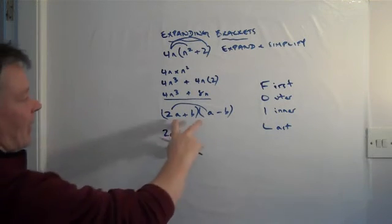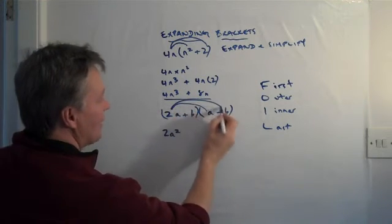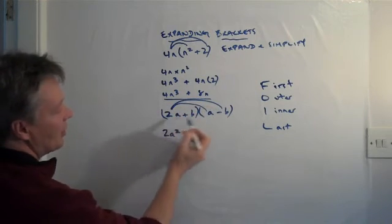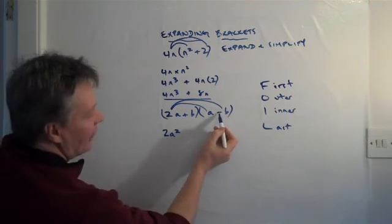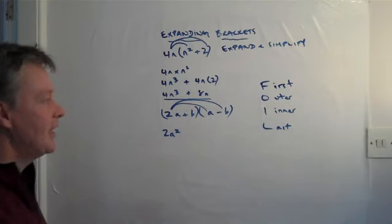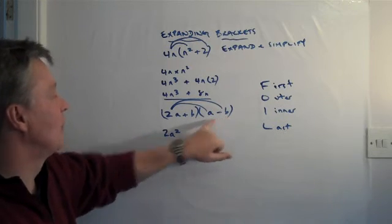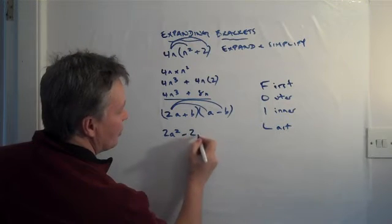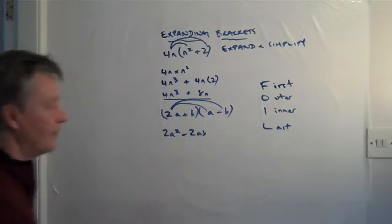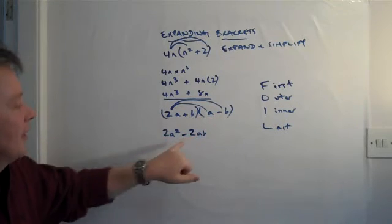And then I multiply the next set of terms, which is 2a multiplied by minus b. Now you've got to be very careful, it's a minus b sign. So minus b multiplied by 2a is minus 2ab. There's my 2ab.